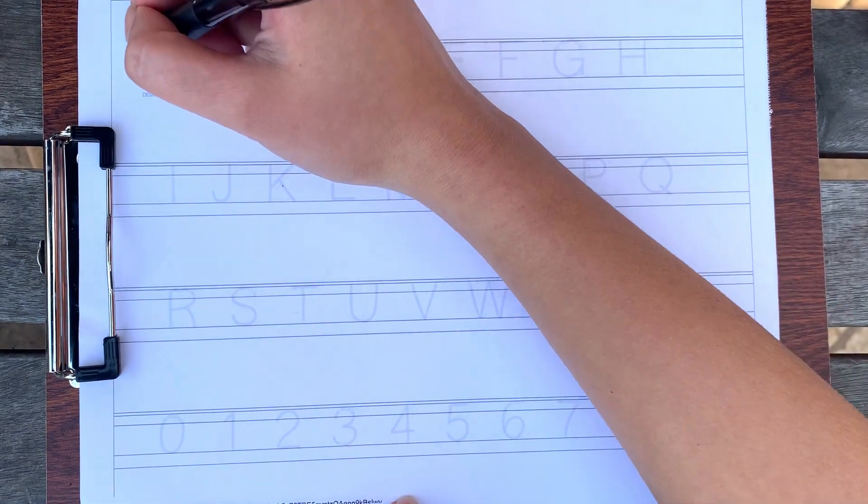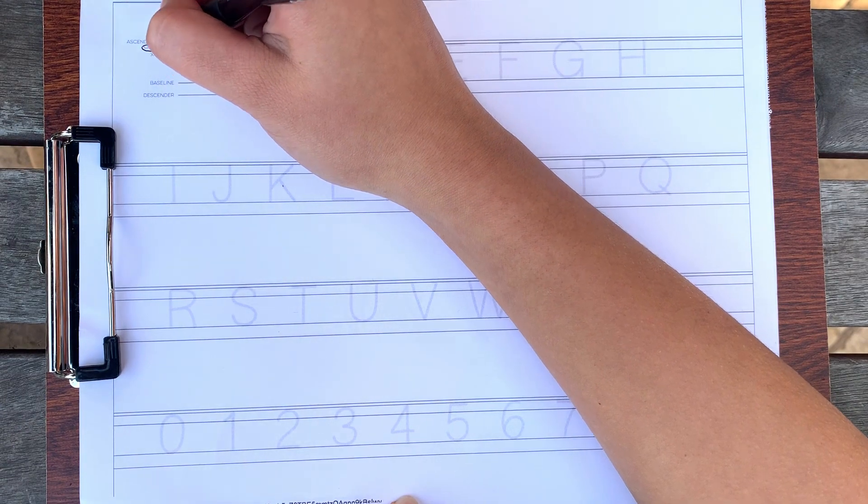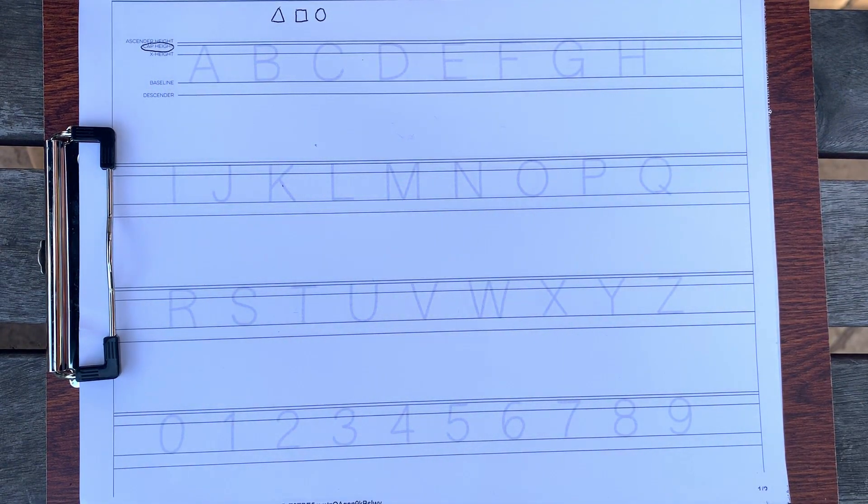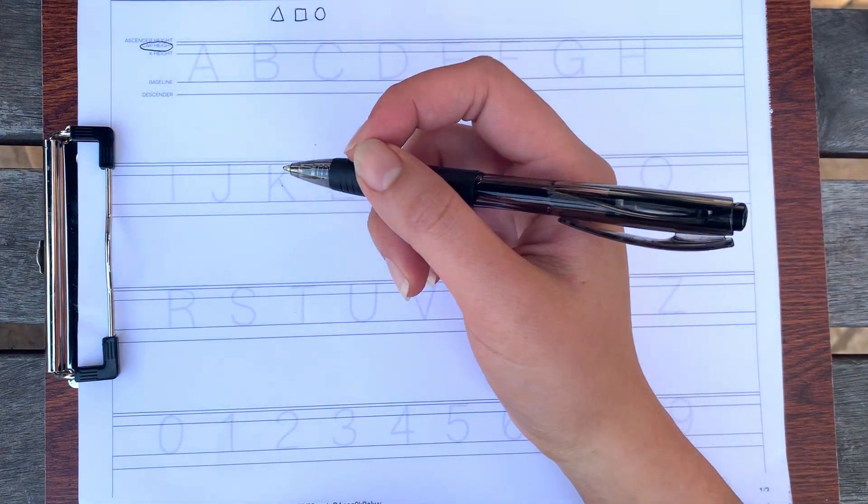You'll see that the page has an extra line we didn't talk about last time, the cap height. You may have guessed, but this cap height is where the height of the capital letters will reach. Looking at our sheet, it may be a little hard to tell, but there are some letters that extend beyond the cap height or beyond the baseline. This is to compensate for the optical tricks our eyes play on us.